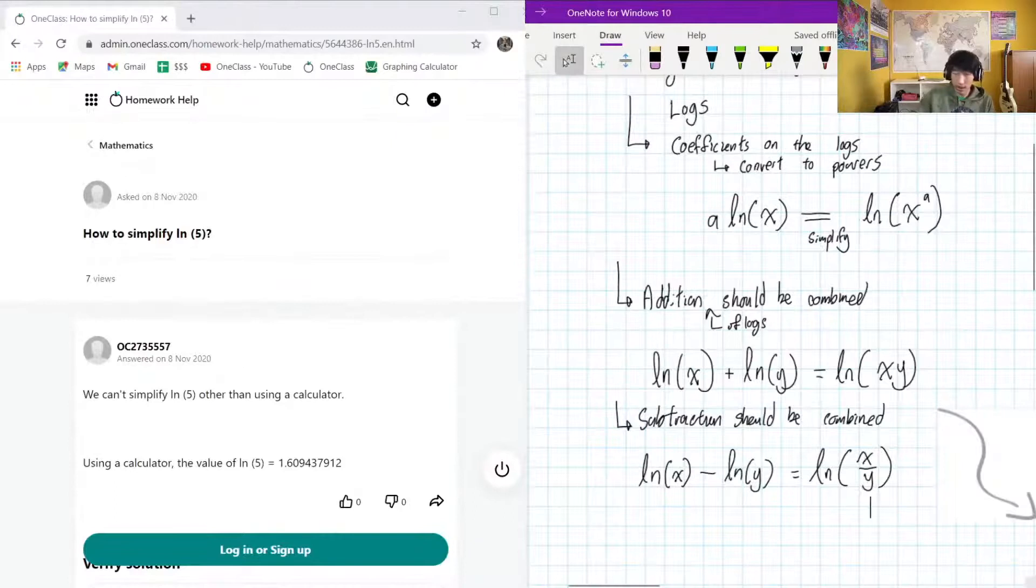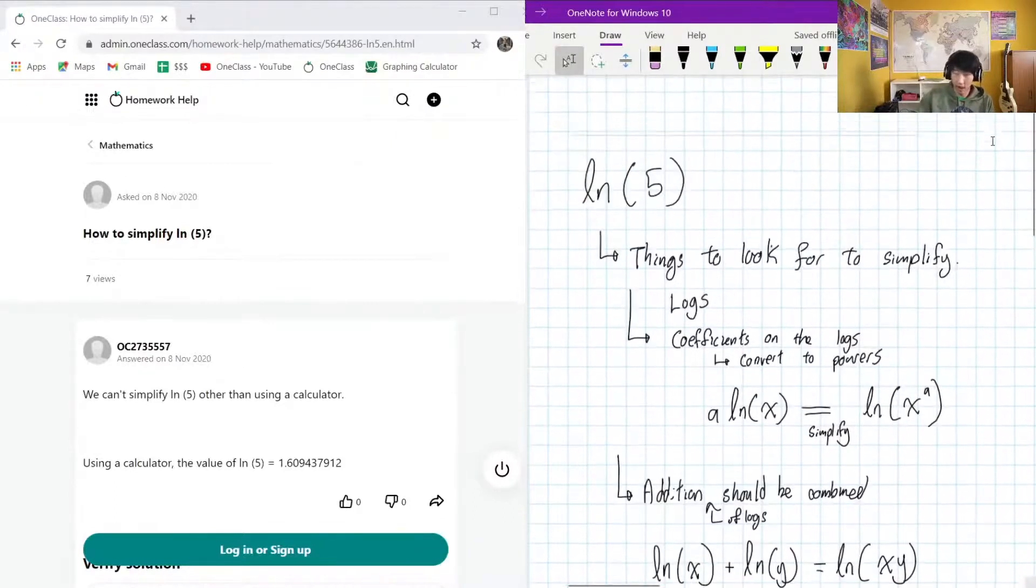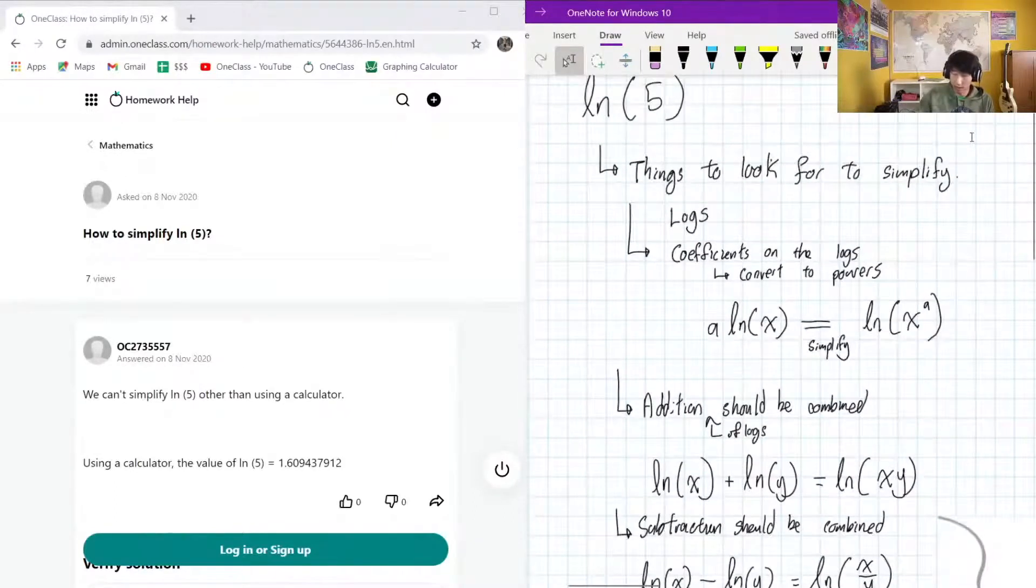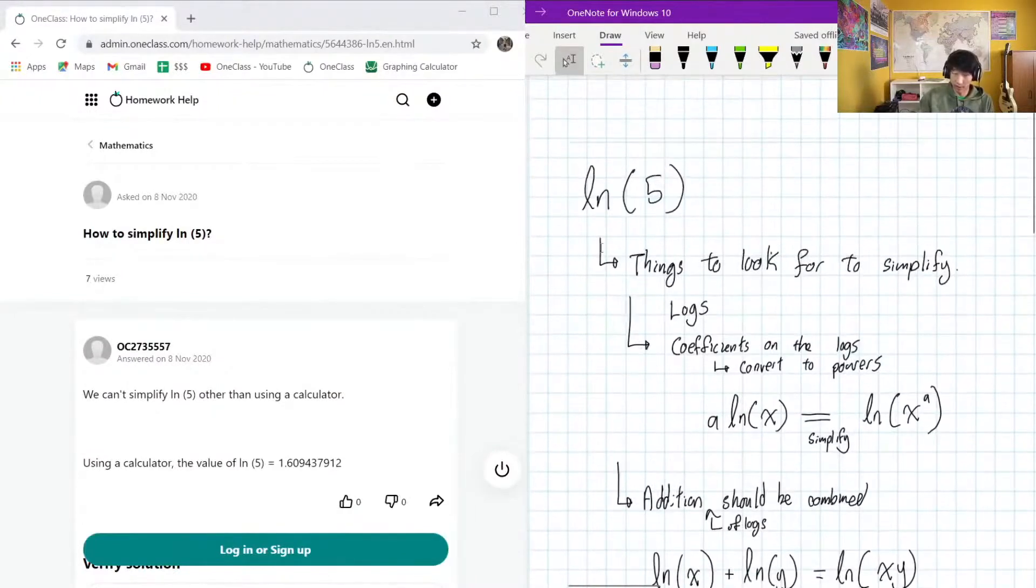Okay, so this is how we would typically simplify logarithms, but clearly none of these are relevant to this particular one that we're given, logarithm of five. There's no coefficient, or the coefficient is one but that's what we want, and there's no addition or subtraction so we're kind of stuck here. This is really as simple as it gets.